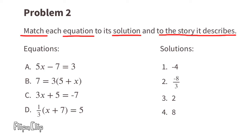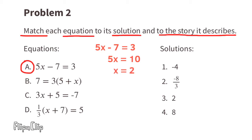Equation a: 5x minus 7 equals 3. We need to add 7 to both sides of the equal sign, which leaves us with 5x equals 10. Next, we divide both sides by 5, which leaves us with x equals 2.